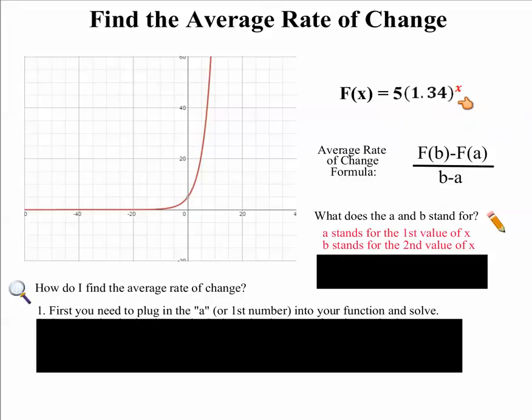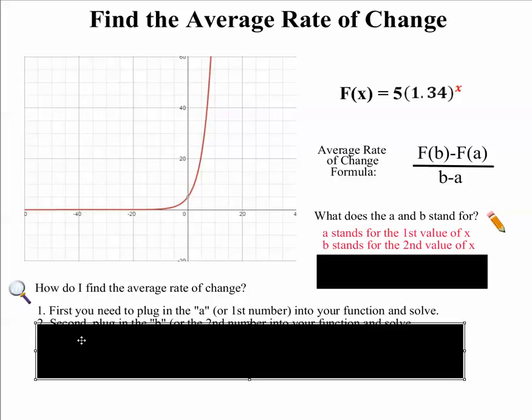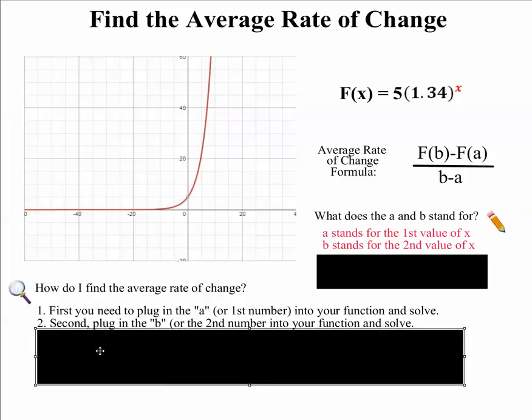So you're going to take whatever number they give you, plug it into this function right here and solve for the answer. Remember order of operations, we have to do the exponent first. And then the second step is going to be, you guessed it, plugging in the b, which is your second number, and you're going to plug that into your function and solve.